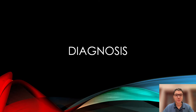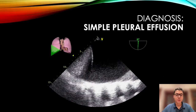Now let's go through the different diagnoses that one can make using lung ultrasound. First, we see a simple pleural effusion. An effusion made out of fluid generally appears as a dark area. The fluid allows the ultrasound to travel further than the normal aerated lung, which dissipates the ultrasound and hides everything behind it. Here, surrounding the effusion, we can see the diaphragm, the liver, and the ribcage.